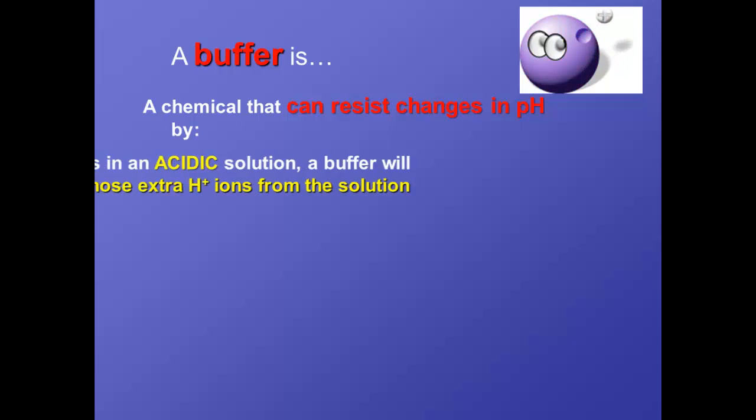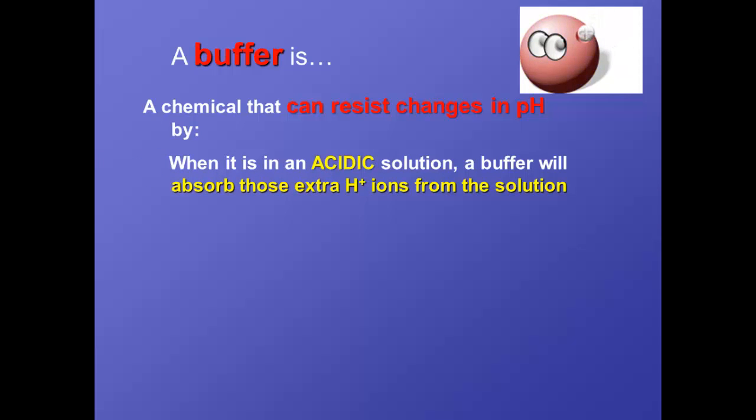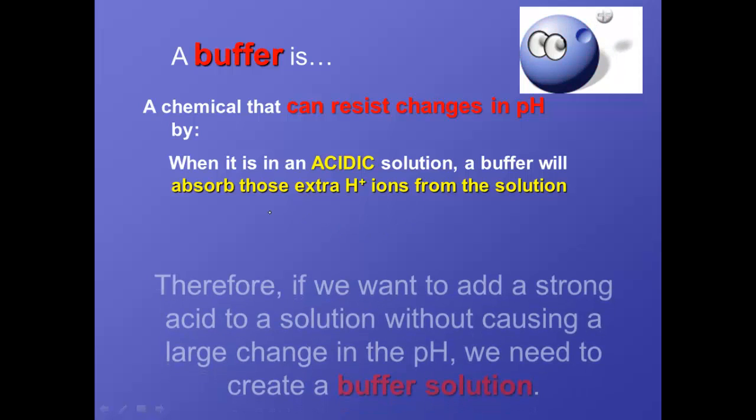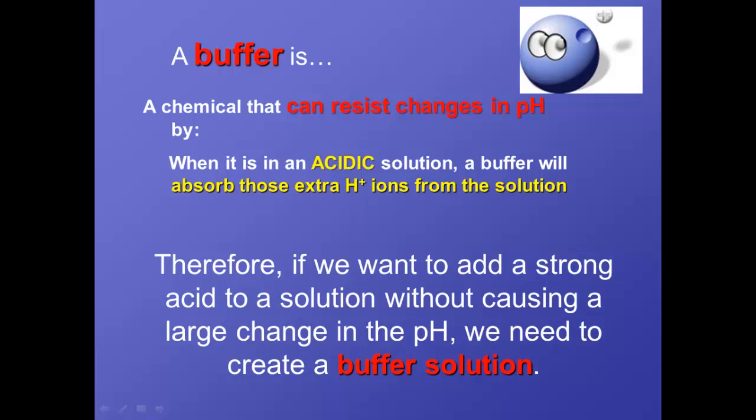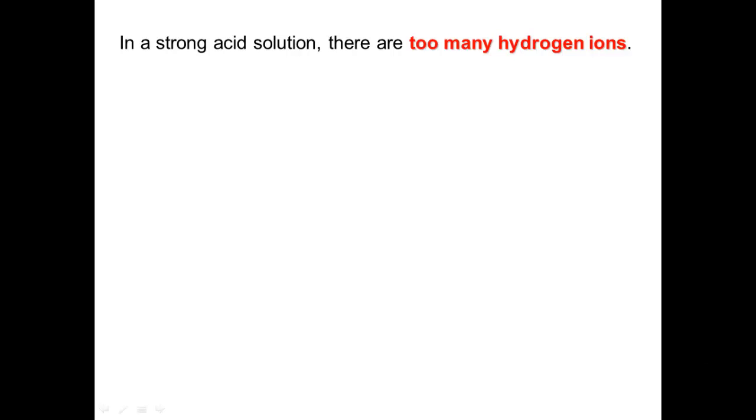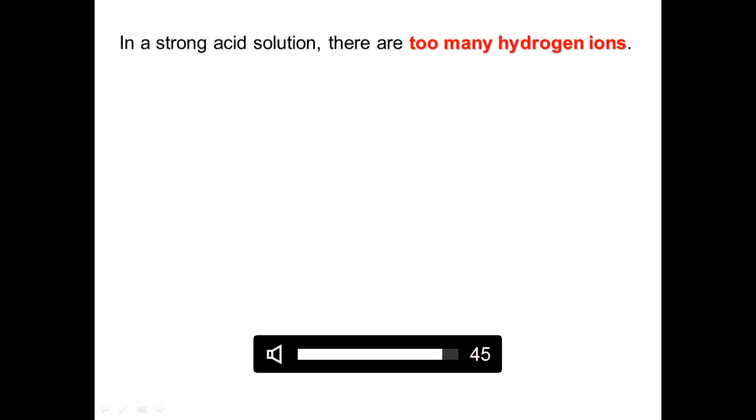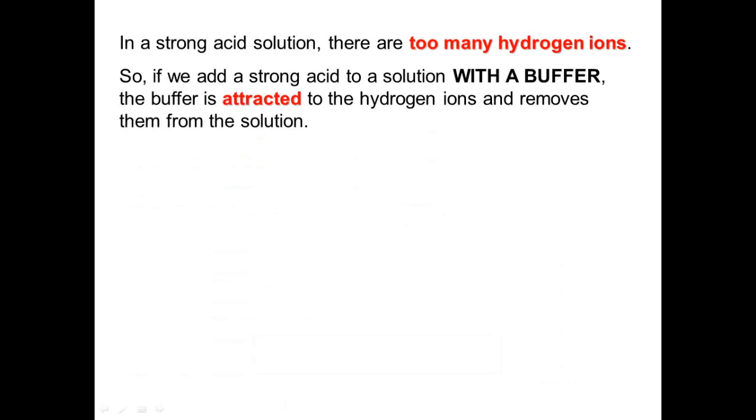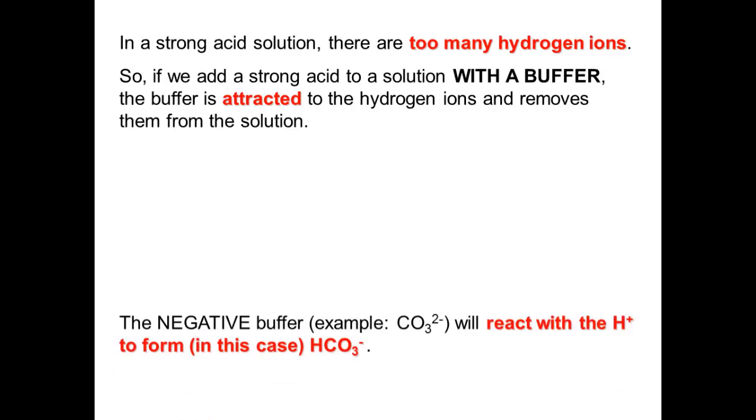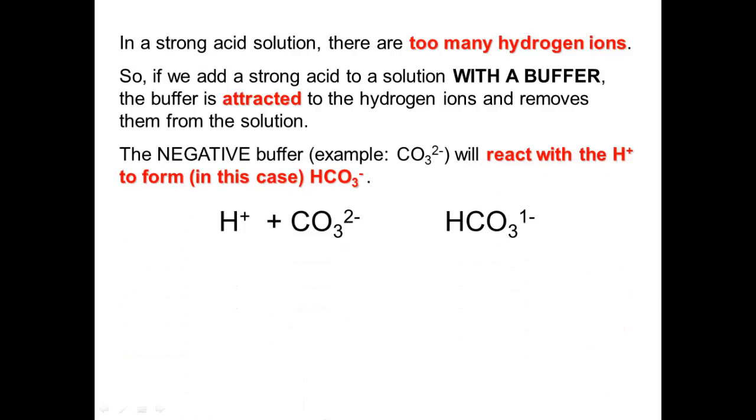What a buffer is, is it's a chemical that can resist the pH from changing. And so if a buffer is in an acidic solution, the buffer will actually take those extra hydrogen ions and absorb them. So a buffer can absorb hydrogen ions. If you have a really strong acidic solution, there are too many hydrogen ions in that solution. And so if we add a strong acid solution to a solution that has a buffer, the buffer will actually attract the hydrogen ions to it and stick the hydrogen ions onto itself, thus removing them from the solution.